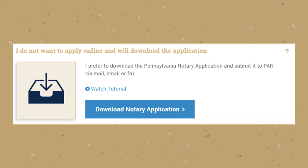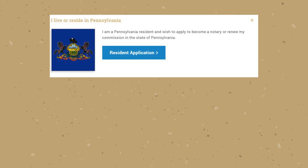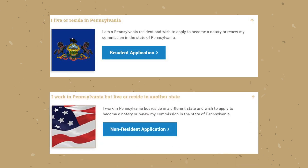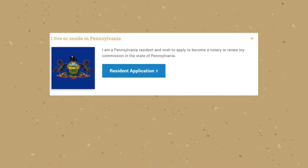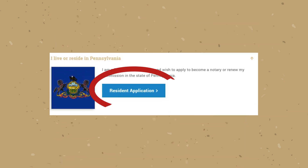If you decide you would rather download the application, fill it out, and send it to PAN you have that option as well. In this walkthrough video we're going to select the option 'I live or reside in Pennsylvania.'